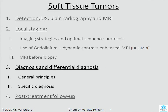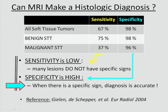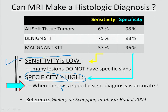Now we will try to give a name to the tumor, and that's difficult in soft tissue tumors. I will give you general principles and then specific diagnoses. The message is that there is high specificity in a few lesions — if you have a specific sign you can make the diagnosis. But in the majority of lesions, sensitivity is low.